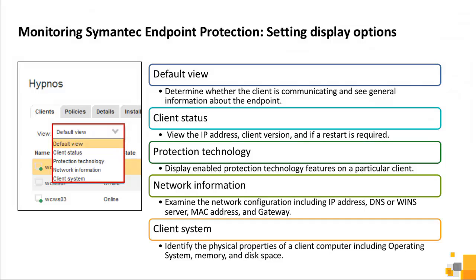Depending on the information you are looking for about a particular endpoint, you can also set display options. The default view allows you to determine whether the client is communicating and see general information about the system, including IP address, client version, and if a restart is needed. You display the enabled protection features for each client with the protection technology view. You can also examine network configuration including IP address, DNS or WINS server, MAC address, and gateway, or identify physical properties such as operating system, memory, and disk space.